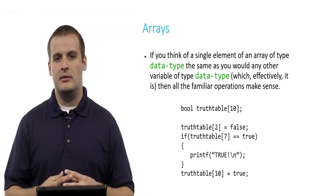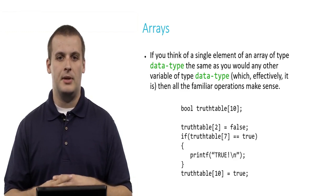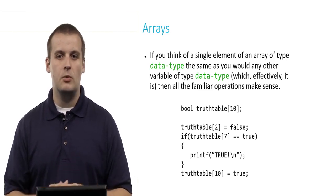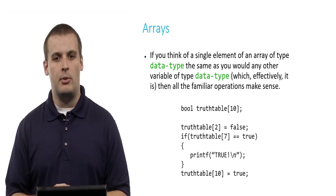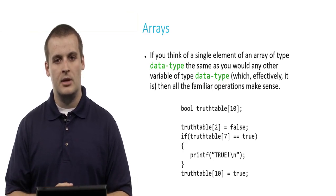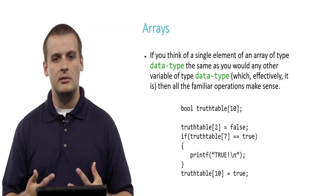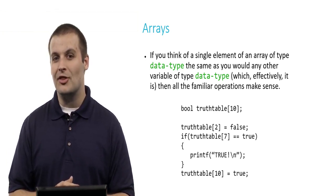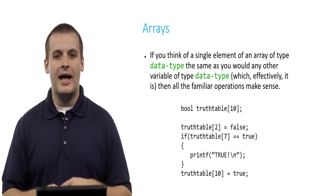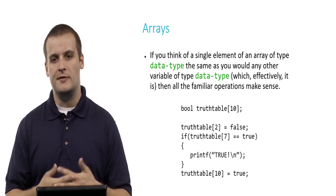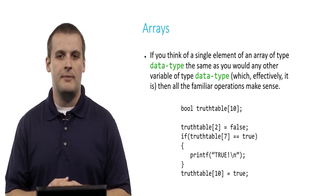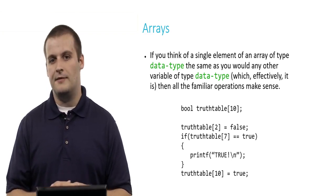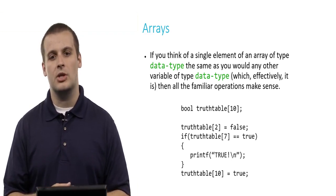If you think of every element of an array of a given type — for example, a single element of an array of type int — the same way you would think of any other variable of type int, all the familiar operations will make sense. We could declare an array of Booleans called truth_table with room for 10 Booleans. Then, just like assigning a value to any Boolean variable, we could say 'truth_table[2] = false', which sets the third element. We can also use it in conditions: 'if (truth_table[7] == true)', meaning if the eighth element of truth_table is true, maybe we print a message to the user — printf("true").